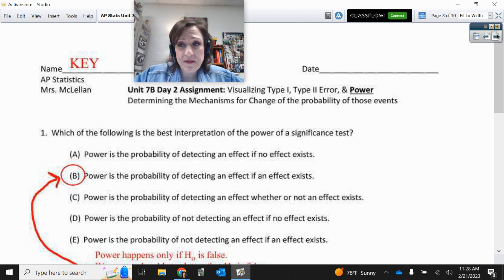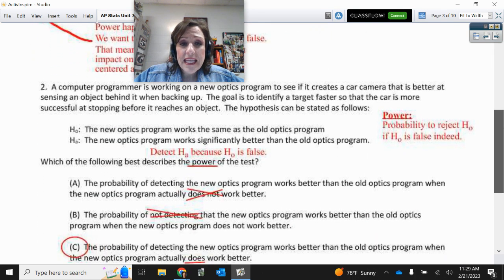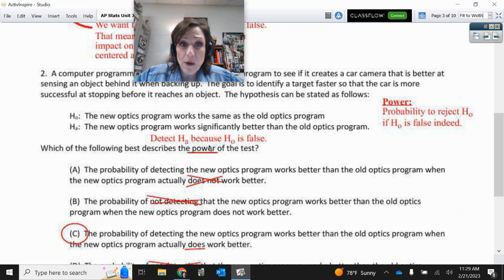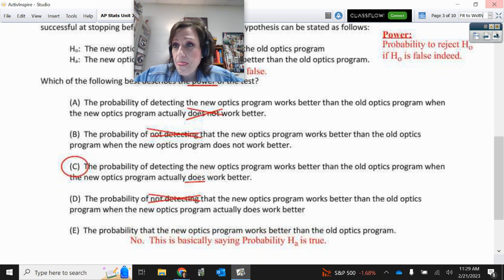I wanted to glance at some of these multiple choices since your quiz is all multiple choice. Remember, power is this definition: the probability of detecting that effect if there really is one that exists. Here we had our null and alternative and wanted to know power. So that's detecting that HA when HA is true, detecting that the new program works better because it actually does work better. So power is detecting HA because HA is true.